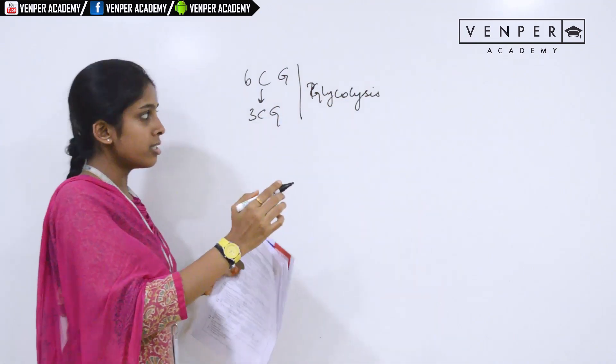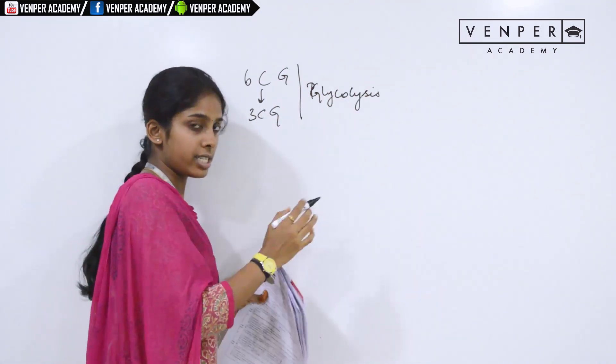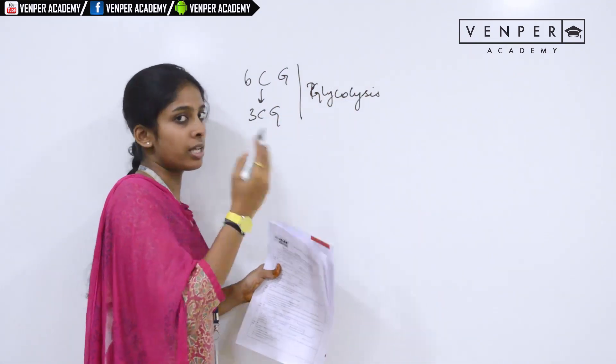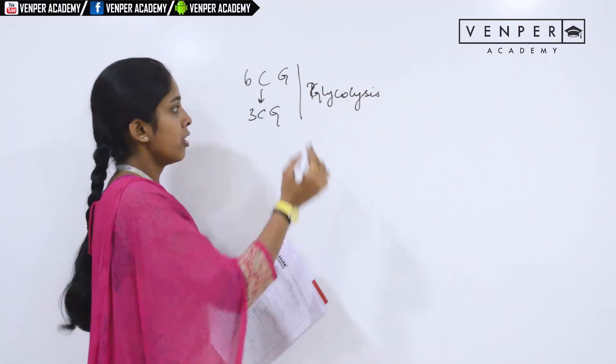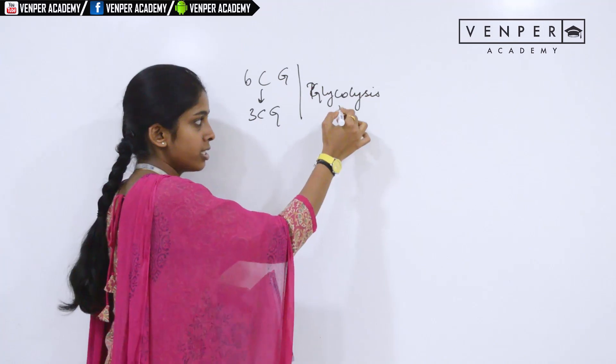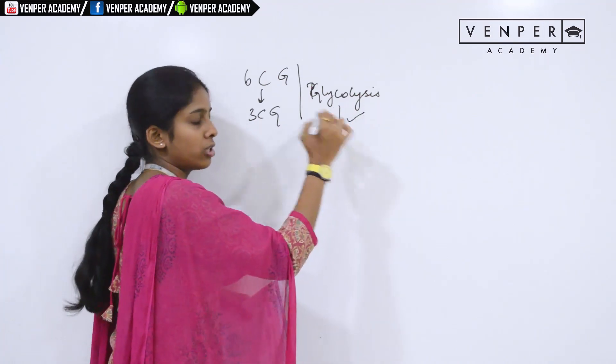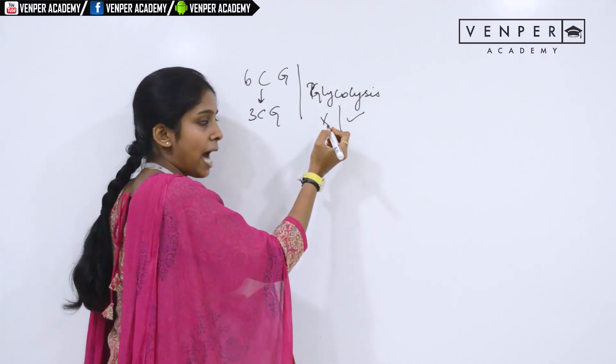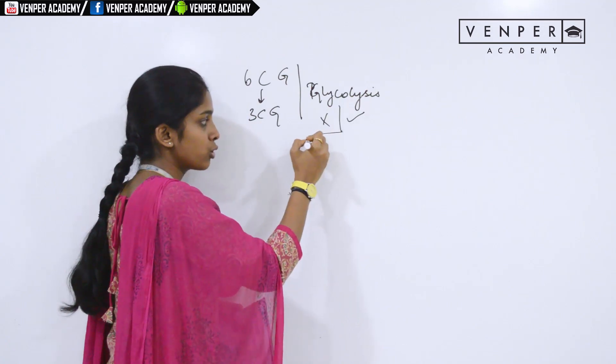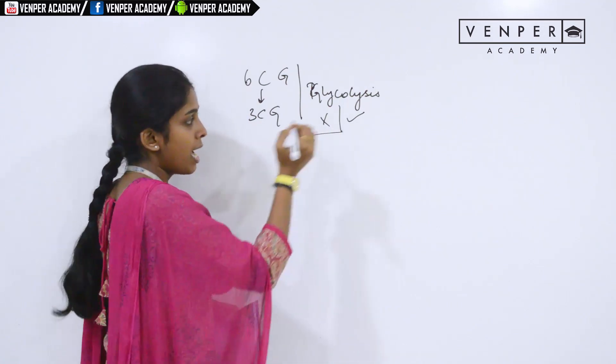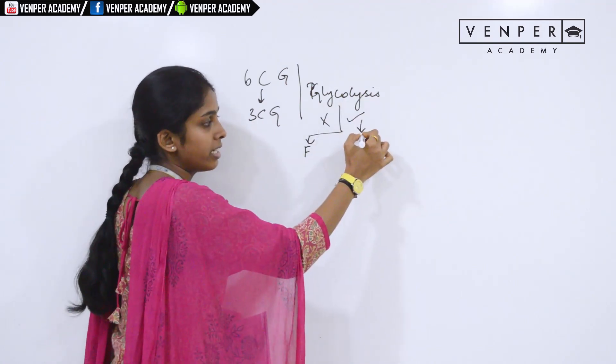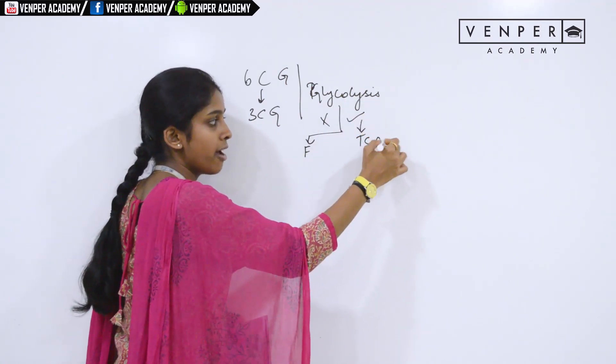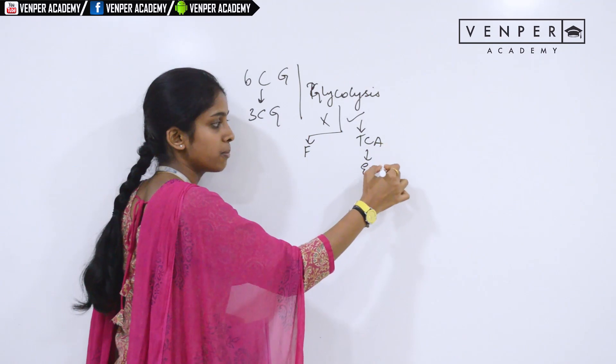Glycolysis is the major process, the first step in respiration of both aerobes and anaerobes. Glycolysis occurs in the cytoplasm of the cell. This glycolysis can take place with and without oxygen. In the absence of oxygen, it leads to fermentation. In the presence of oxygen, glycolysis enters the Krebs cycle, the TCA, followed by the electron transport chain.